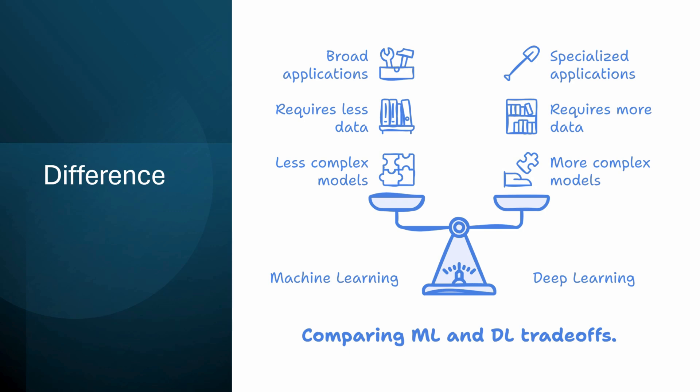Ultimately, the decision between machine learning and deep learning depends on the complexity of the problem, the nature of the data, and the available resources.